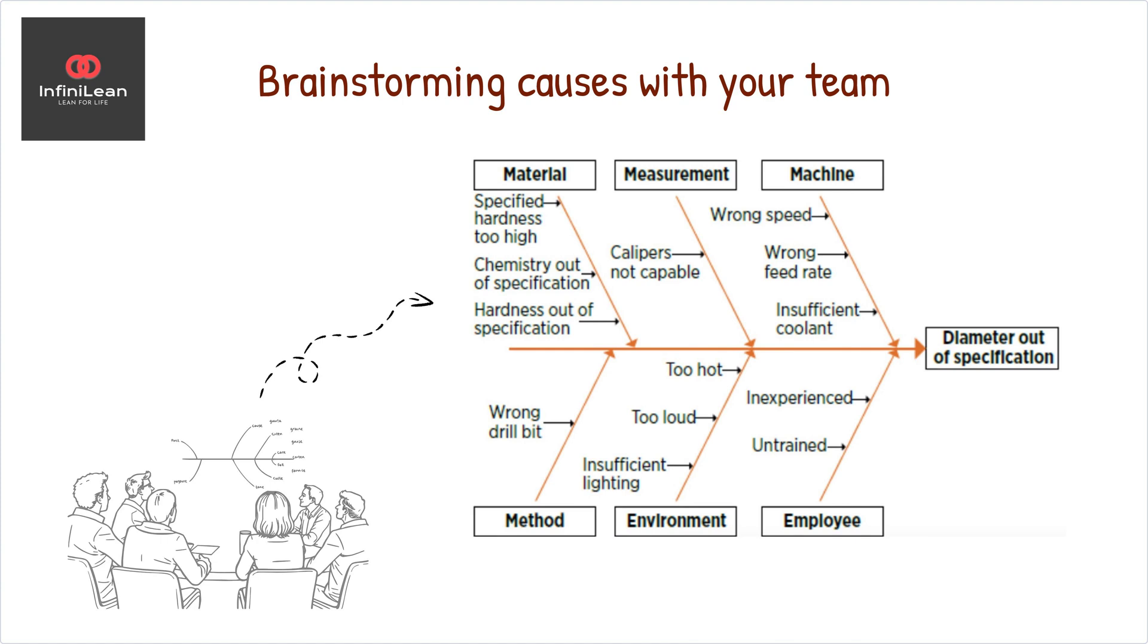Document each cause as a smaller line branching off the main bone for that category. This is where the diagram starts looking like a real fish skeleton.